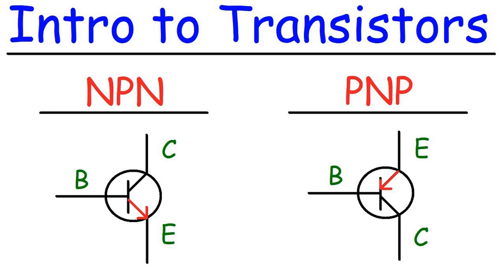PNP Transistor: In a PNP transistor, the arrangement is reversed. It has three layers with a thin N-type layer sandwiched between two P-type layers. In a PNP transistor, the majority charge carriers are holes, which are positive charge carriers.